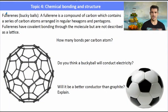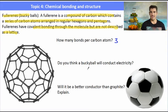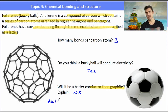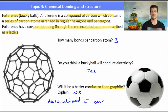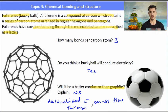A fullerene or buckyball is a compound of carbon which contains a series of atoms arranged in regular hexagons and pentagons, and it looks a lot like a soccer ball. The bonding in a buckyball is not referred to as a lattice. Each carbon has three bonds, that means it will conduct electricity because of the delocalized electrons. But it won't be a better conductor than graphite because the electrons are simply moving around and can't move in one general direction.